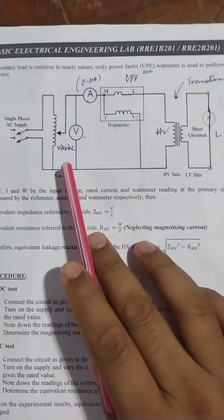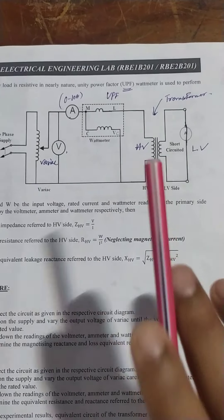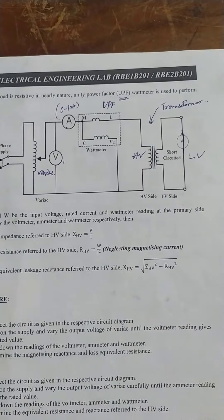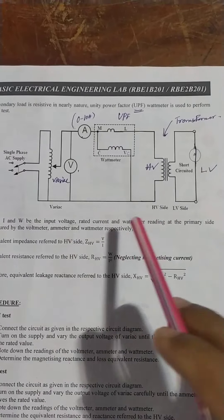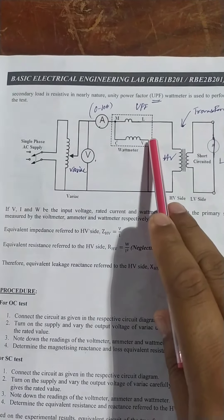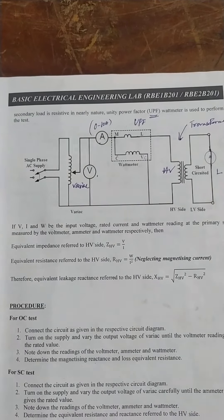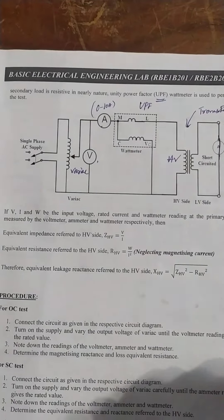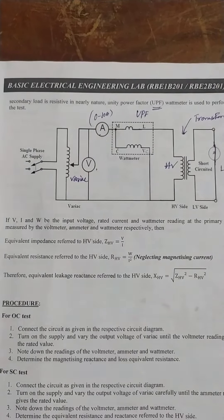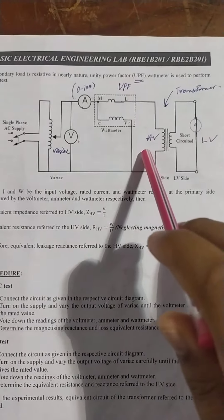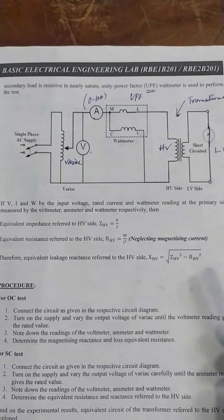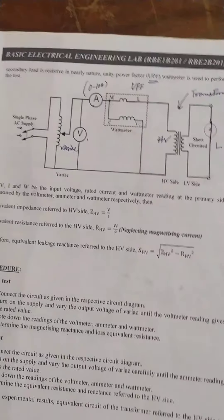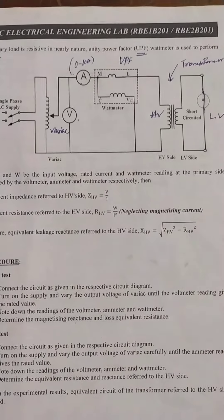We will be applying the rated current by varying the voltage slightly until we get the rated current value on the HV side. Once we reach the rated value we stop and note the voltmeter, ammeter, and wattmeter readings. From these readings we find the winding parameters — specifically the copper loss occurring in the system — and then determine the equivalent resistance and equivalent reactance of the transformer referred to the high voltage side.